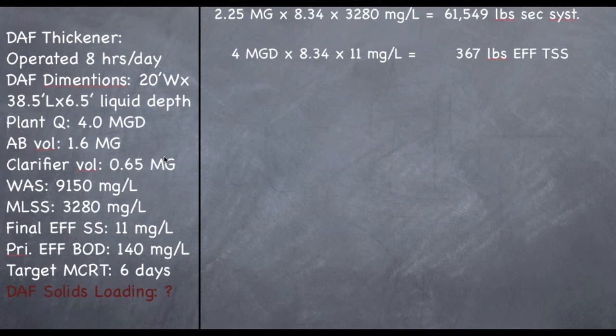So, for those of you that haven't figured it out by now, a wasting rate formula is the pounds in a secondary system, divided by your target MCRT, subtract out the pounds of effluent TSS or SS leaving per day, and divide that all over the WAS concentration, times 8.34, and we'll give you your wasting rate in MGD.